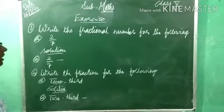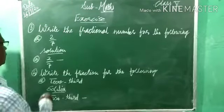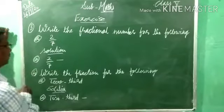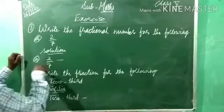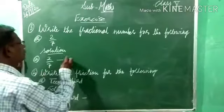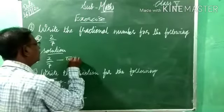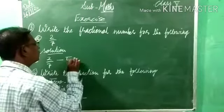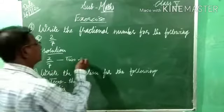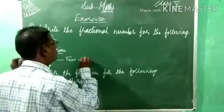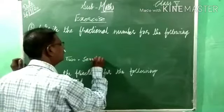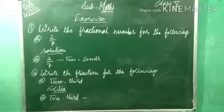Third question: write the fractional number for the following. It is given in numeral — 2 by 7. We have to write it in words. 2 by 7 means two-sevenths. Understood?